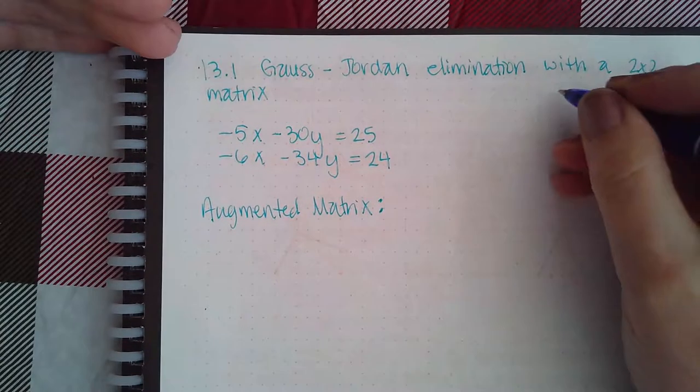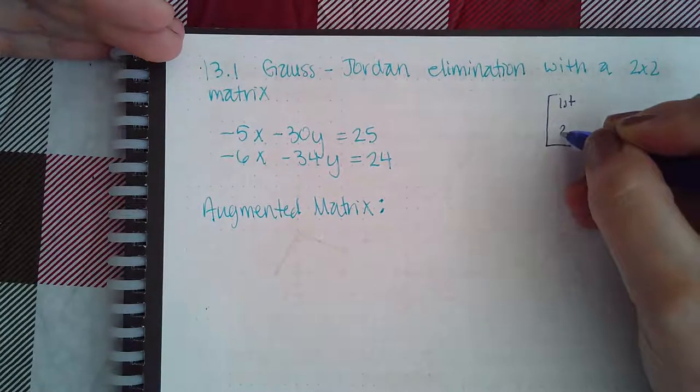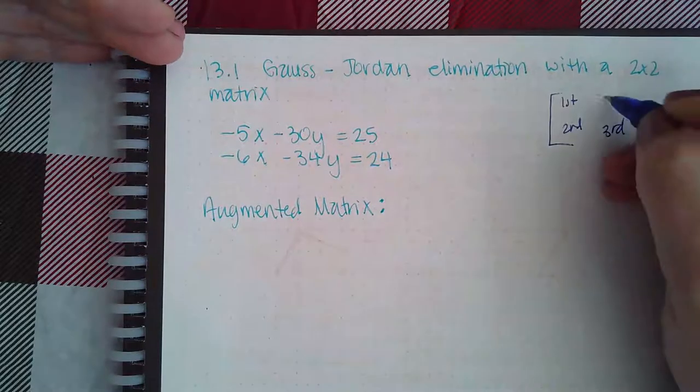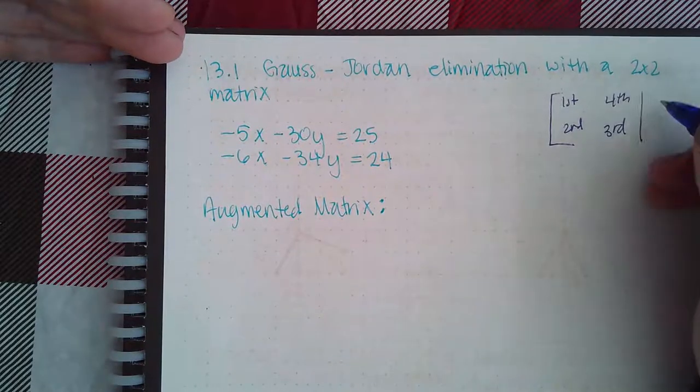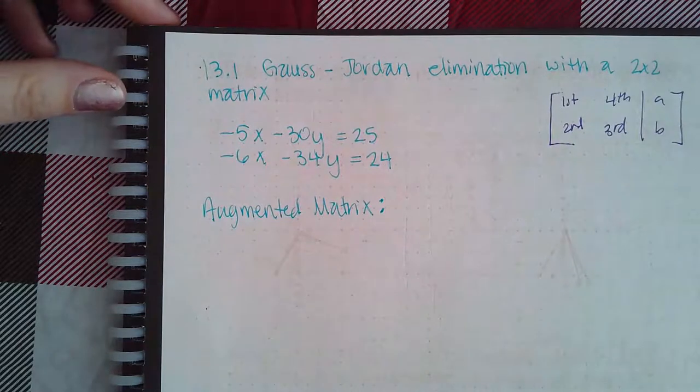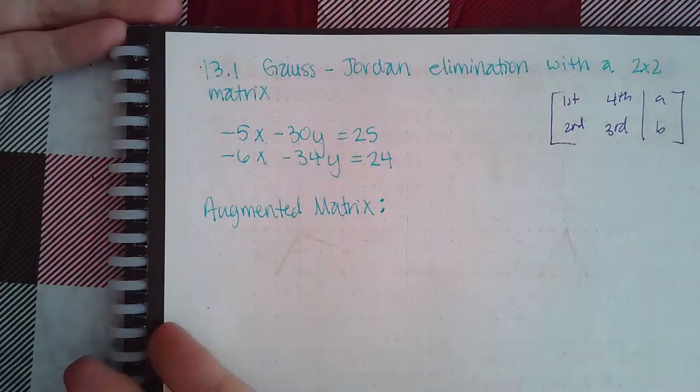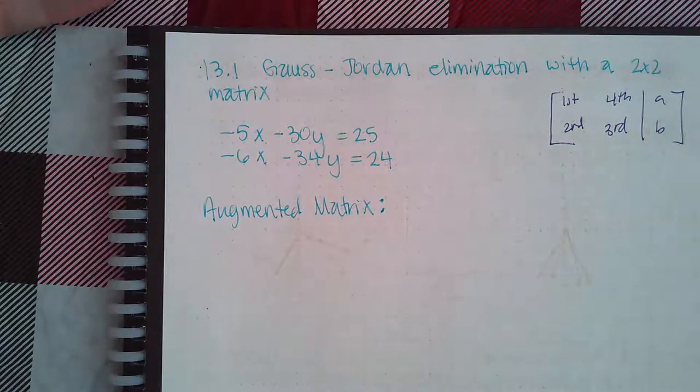Which is to first get this guy to a one, then get this guy to a zero, get this guy to a one, and then get this guy to a zero, and whatever you end up with over there will end up being your solution. As long as you are following that pattern in the previous topic, you will be able to complete their Gauss-Jordan elimination.